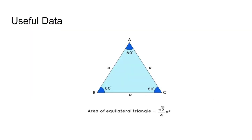So, suppose that in this figure an equilateral triangle is shown and each side is of length A units. Hence, the area of an equilateral triangle is equal to root 3 by 4 times A squared. Let's solve this problem.